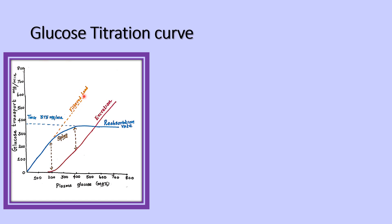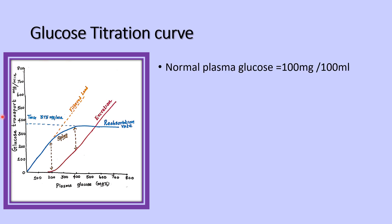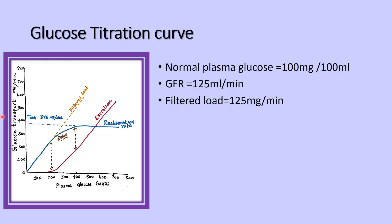This line is the filtration load. Filtration load is calculated by plasma glucose multiplied by the GFR. The normal glucose is 100 mg per deciliter, and the normal GFR is 125 ml per minute. Therefore, the filtration load is 125 mg per minute.